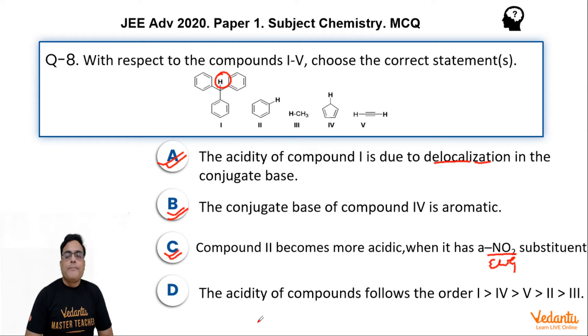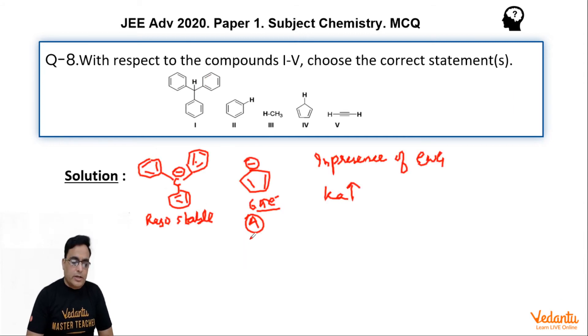Now they say the acidity of compounds follows the order 1 > 4 > 5 > 2 > 3. This is wrong. Because acidic strength of this 4 number compound is highest. Because after removing H+, it becomes aromatic. The anion becomes aromatic. So attainment of aromaticity always increases the stability very drastically. That is why 4 must be highest.